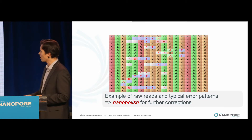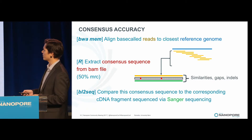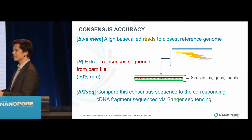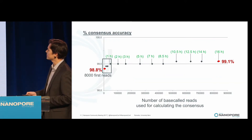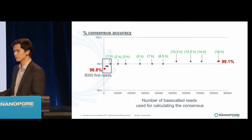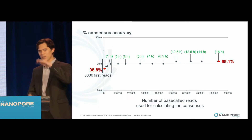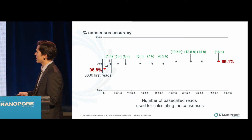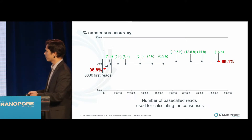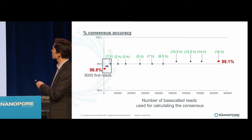How good is the correction? We aligned those reads to the closest reference genome, extracted the consensus sequence from a BAM file, and then validated this approach by comparing the indels and errors found against sequencing of the same locus using Sanger sequencing. The result of a 16-hour run — pretty long because it's cDNA-based — is that you get something like 98.8% consensus accuracy, piling up reads and looking at the majority base. Based on around 4,000 to 8,000 reads, you get 98.8%. If you let it run further and accumulate more depth, your consensus accuracy doesn't increase much — you reach 99.1%.